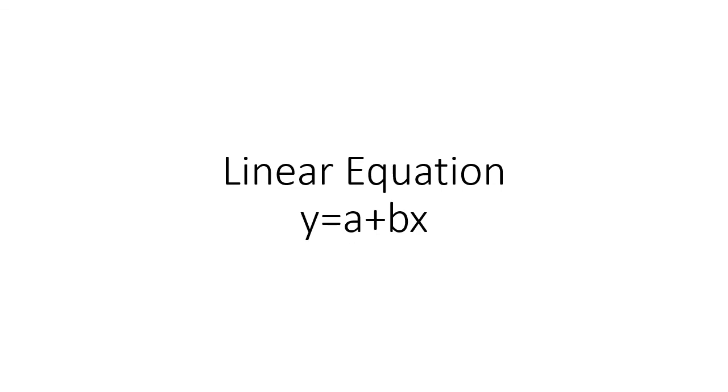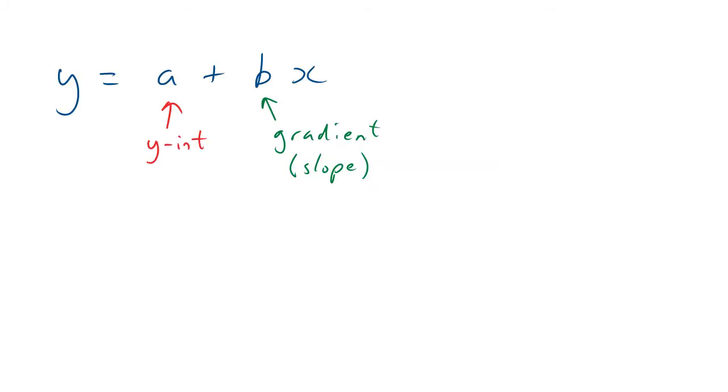The linear equation y equals a plus bx, which is also known as the least squares regression line. The normal format I use on these videos is y equals a plus bx because that's what they use on the VCAA for some reason. You might be used to y equals mx plus c or y equals ax plus b, but I think it's good to get into this habit because that's what's on the exams. Just remember the gradient is the one next to the x and the y-intercept is the one that's not next to the x.